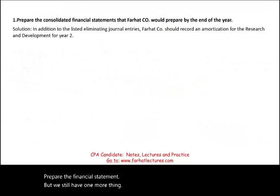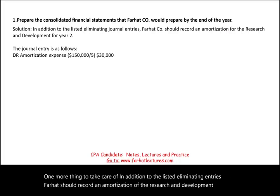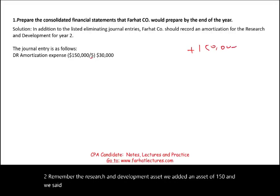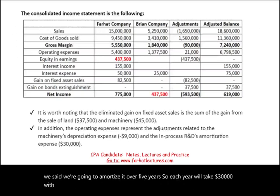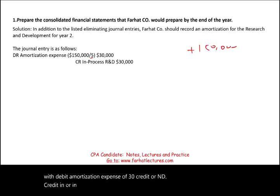One more eliminating entry: Farhat must record amortization of the in-process R&D asset for Year 2. The $150,000 R&D asset is amortized over 5 years, so amortization expense is $30,000 per year. The entry debits Amortization Expense $30,000 and credits In-process R&D $30,000.